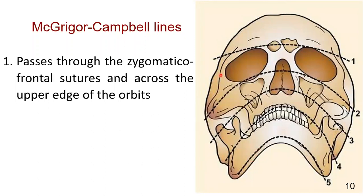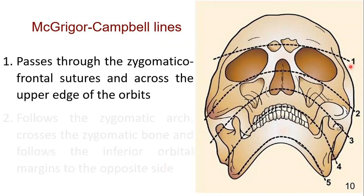The first line passes from the right zygomatico-frontal suture, then the right supra-orbital ridge, then the frontal sinus, then the left supra-orbital ridge, and the left zygomatico-frontal suture.